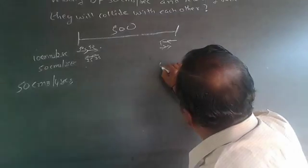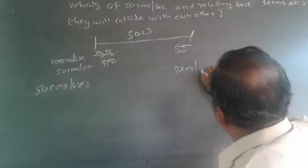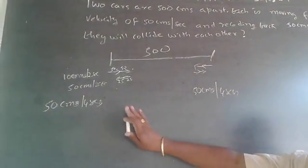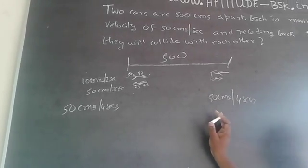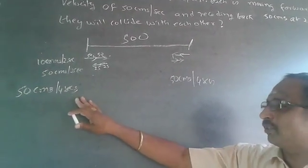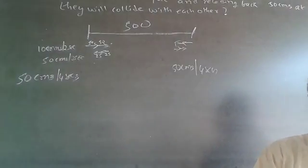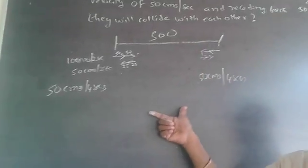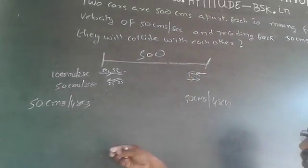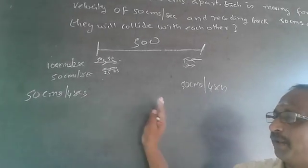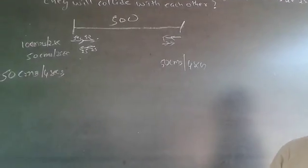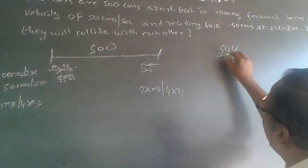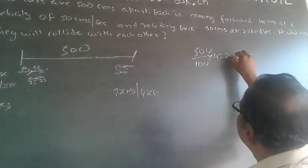The speed of each car is 50 centimeters in 4 seconds. Since both cars are moving in opposite directions, we use relative velocity — opposite direction is always plus. So both cars together cover 50 plus 50 equals 100 centimeters in 4 seconds. They together need to cover 500 centimeters.